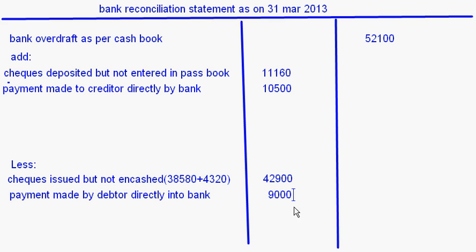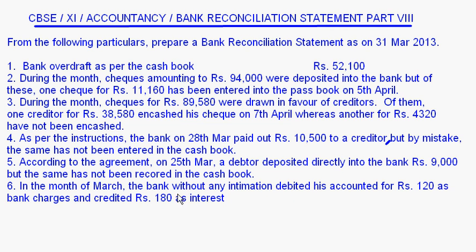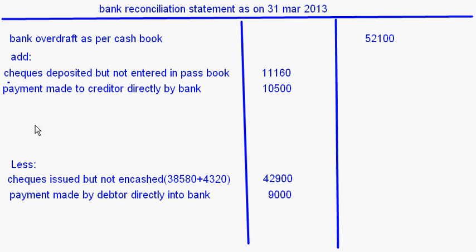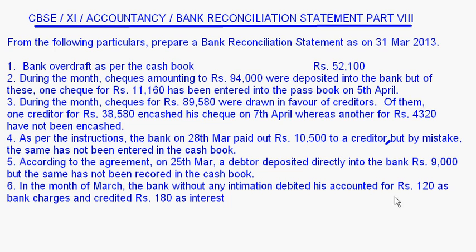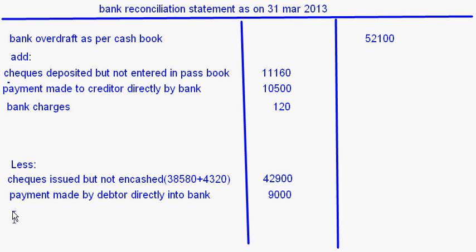In the month of March, the bank without any intimation debited his account for rupees 120 as bank charges. When the bank deducts rupees 120 as bank charges, the overdraft balance as per the bank becomes more — so bank charges should be added. In the same entry, the bank also credited rupees 180 as interest. Credited rupees 180 as interest means the overdraft balance comes down by 180 in the passbook — so this should be deducted.